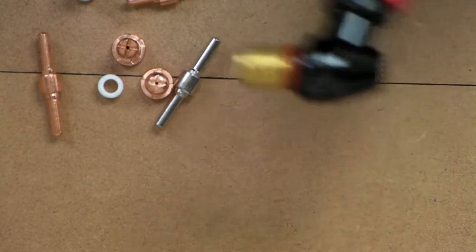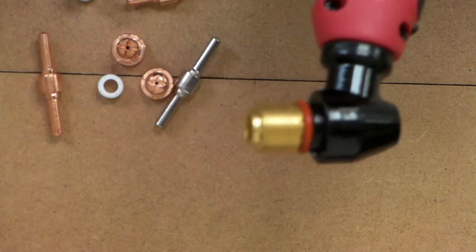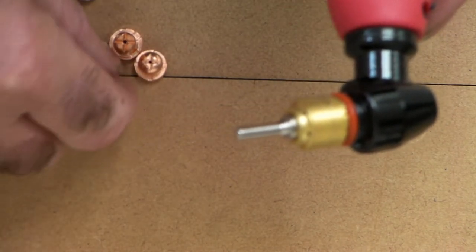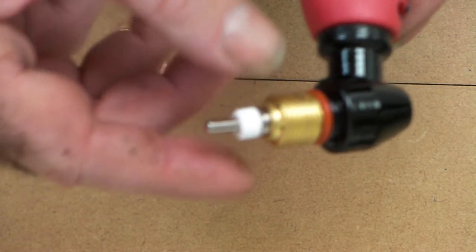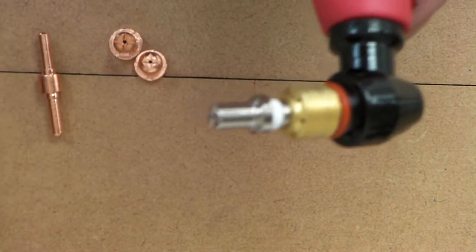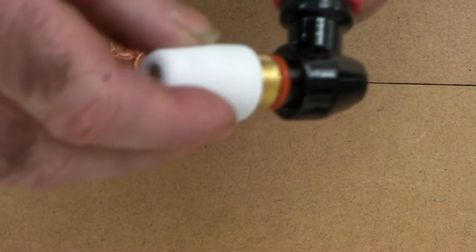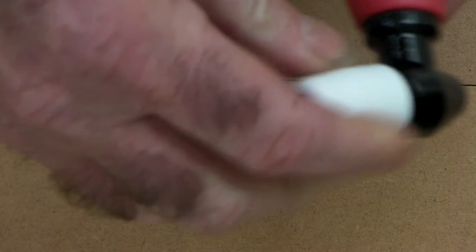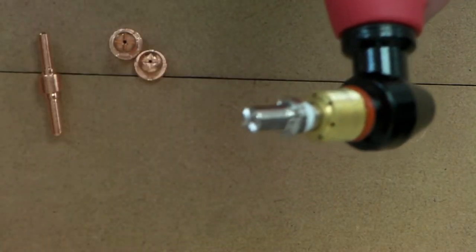They will all fit in this gun here. We can go with the nickel plated and put the nickel plated in here, put the original swirl ring in there, put the nickel plated cutting tip in there, then put the original ceramic cup on there, and you're ready to cut. Or you can do the same thing...